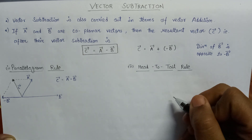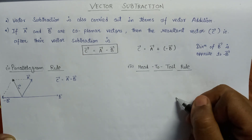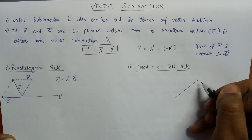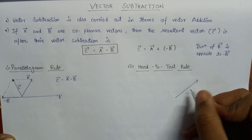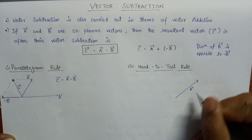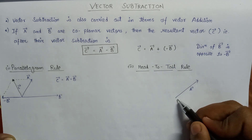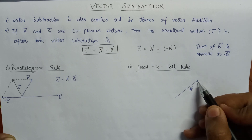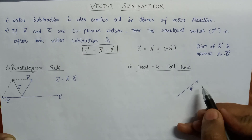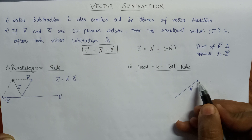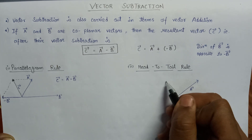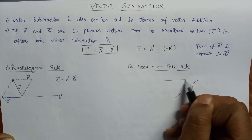Now let's talk about the head-to-tail rule. According to the head-to-tail rule, here is the A vector — this is the tail of A vector and this is the head of A vector. If the head of A vector is connected to the tail of minus B vector.